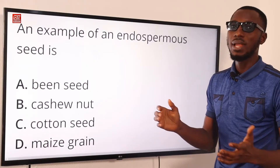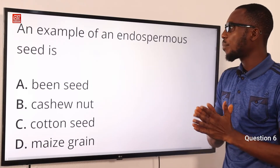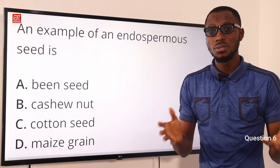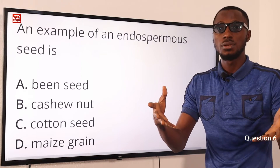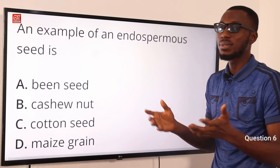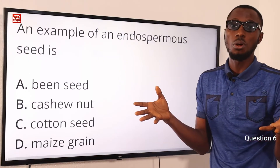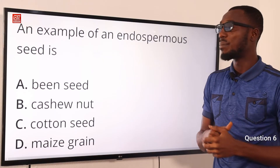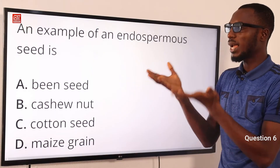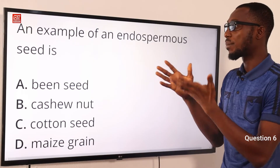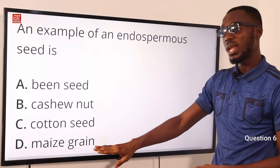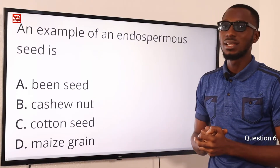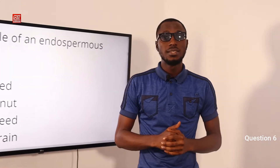Question 6: An example of an endospermal seed is what? The endosperm is the primary source of food for the developing embryo and serves as food storage, located close to the embryo. Examples of endospermal seeds include maize and castor plant. Looking through the options, we have maize, so the correct option is D: maize.